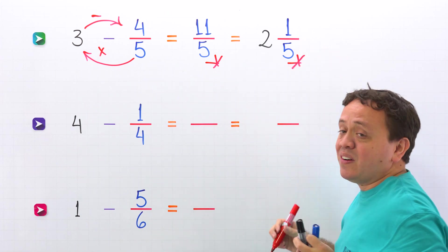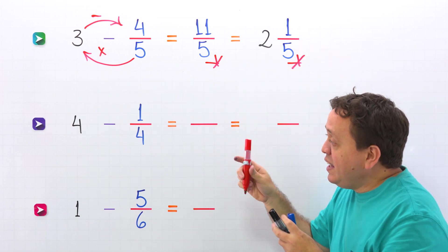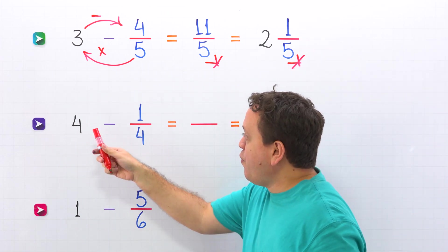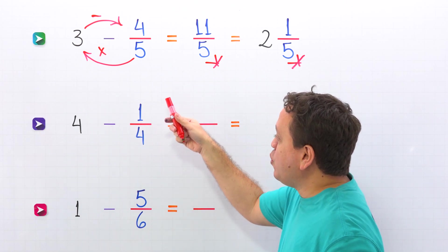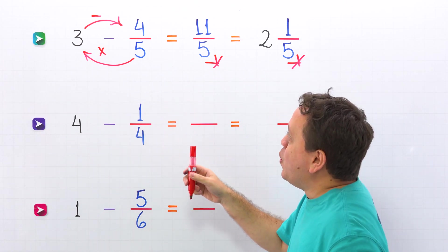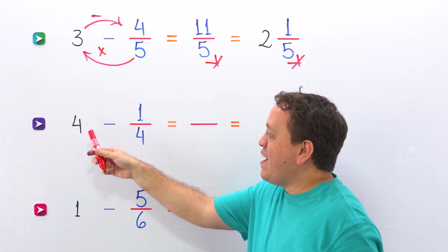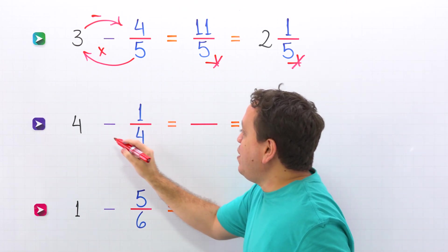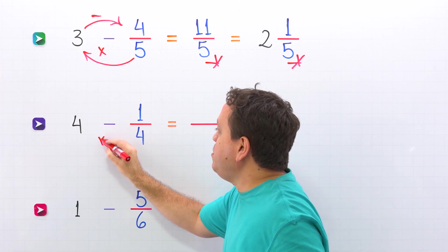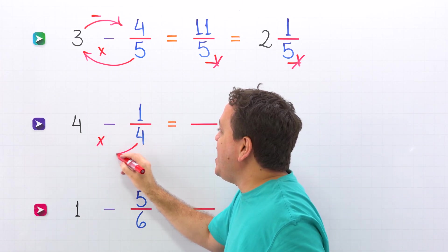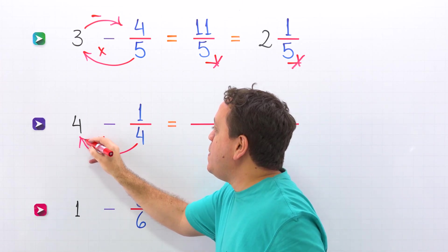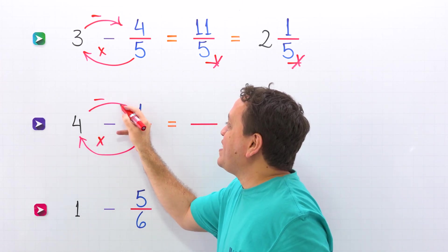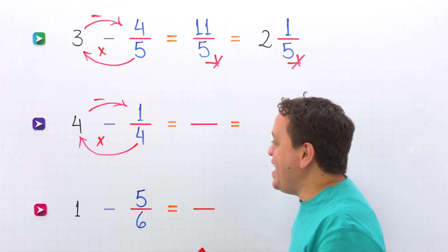Let's continue with the second example. In this example, we need to subtract 4 minus 1 fourth. Once again, we have a whole number and a fraction. To find the difference, first we multiply the denominator by the whole number, and then we subtract the numerator.